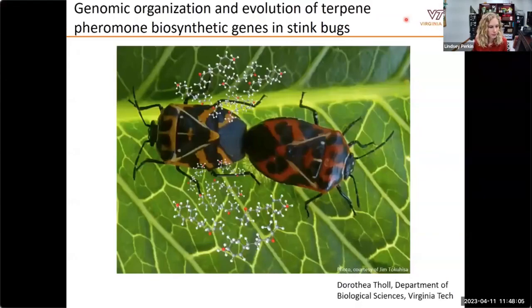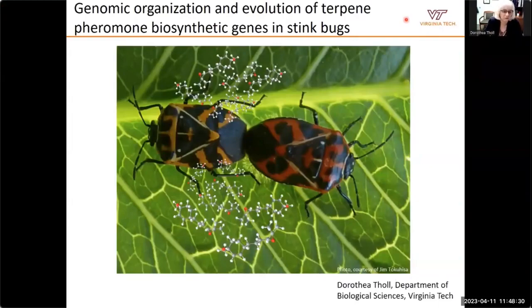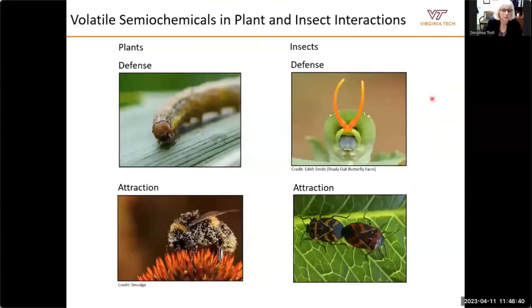Welcome and thank you for your interest in my presentation. My name is Dorothea Toll. I'm a professor in the Department of Biological Sciences at Virginia Tech. I would like to thank the organizers of this year's Arthropod Genomics Symposium, particularly Lindsay Perkin, for the kind invitation. In my talk today, I will present our latest work on terpene pheromone biosynthesis in stink bugs — the genomic organization of terpene biosynthetic genes and their evolution in these species and other insects. Research in our lab focuses on the metabolism, evolution, and function of small molecules, particularly volatile semiochemicals important in chemical interactions of plants and insects.